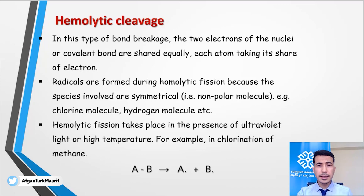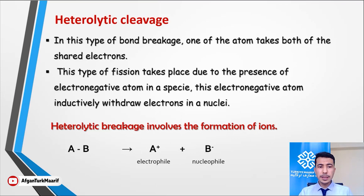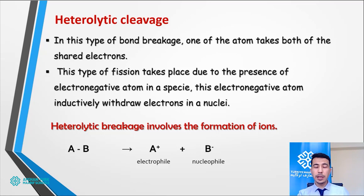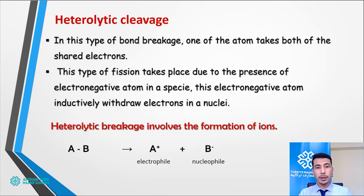Now let's study heterolytic bond cleavage. In this kind of bond breakage or bond fission, one of the atoms takes both of the shared electrons. Using our business analogy: in hemolytic cleavage both partners take their own share back. But in heterolytic cleavage, you start a business with your friend, you both contribute money, and when you decide to leave, your friend says 'you can go, but I will not give you your share — because he is powerful.' This kind of breakage is known as heterolytic bond cleavage.